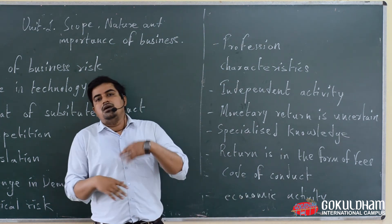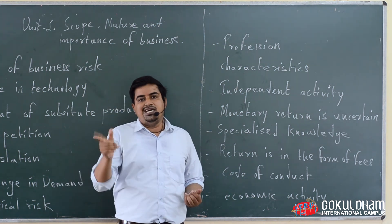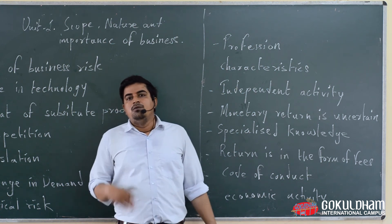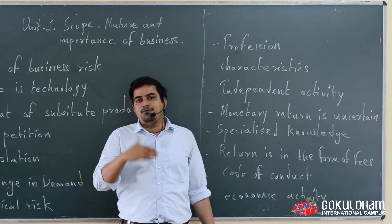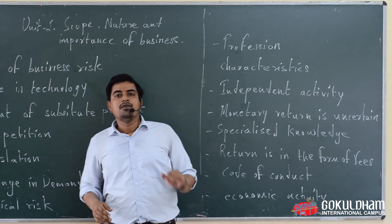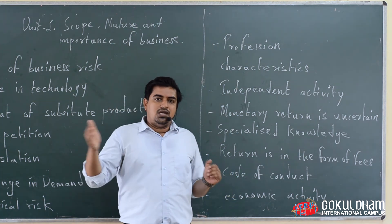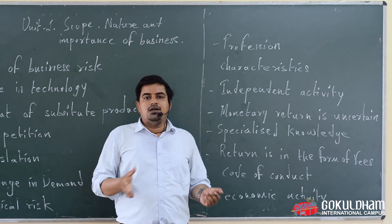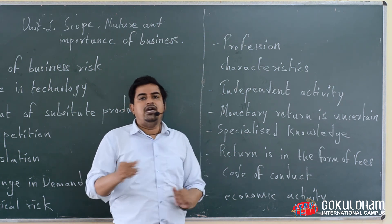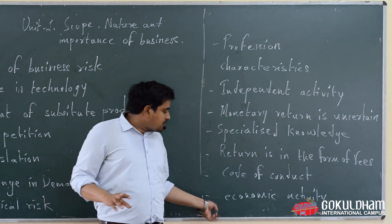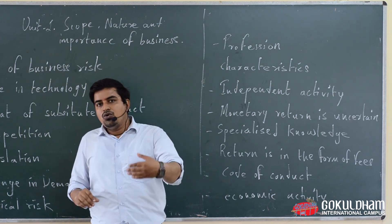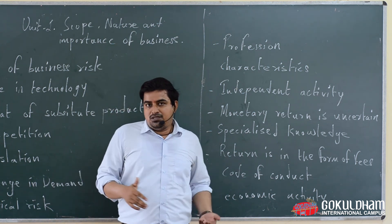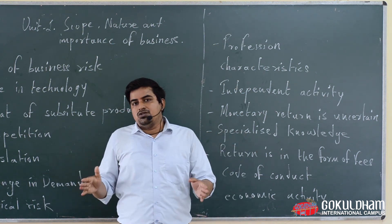The fifth characteristic is code of conduct. Some code of conduct and ethics are framed by the respective association related to a particular profession, which every professional must follow. For example, an advocate receives a law degree from a law institute, and that institute teaches a code of conduct — what to do and what not to do in their field. Code of conduct को आप यह समझ सकते हो कि अपने work में कौन सी चीज़ें करनी चाहिए और कौन सी avoid करनी चाहिए।